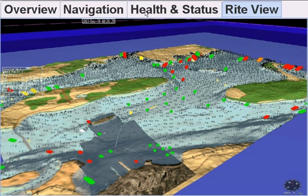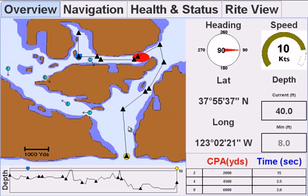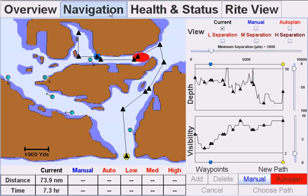Using the MSAT, commanders can see a broad overview of the surrounding contact picture, as well as basic information about course, speed, and depth. When hazards arise, such as the oil spill indicated in the top right, commanders can quickly replan to reach the goal position.